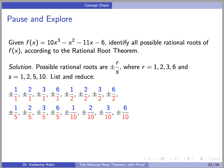Okay, so possible rational roots are ±r/s, where r equals 1, 2, 3, or 6, and s equals 1, 2, 5, or 10, since 1, 2, 3, and 6 are the positive divisors of the constant term, and 1, 2, 5, and 10 are the positive divisors of the leading coefficient. So let's list them all and then reduce.